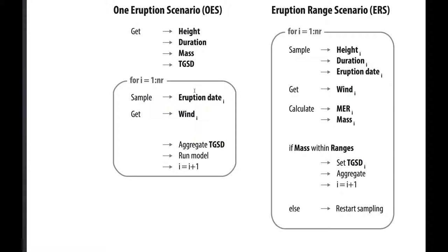We get an eruption date and we get the wind that is the closest to this eruption date. Then we aggregate if you want the total grain size distribution. Again for that I recommend you refer to the paper, the user manual, and the Bonadonna 2002 paper on Montserrat, and then we run the model and restart our loop. In this case, eruption source parameters are fixed, wind is varying.